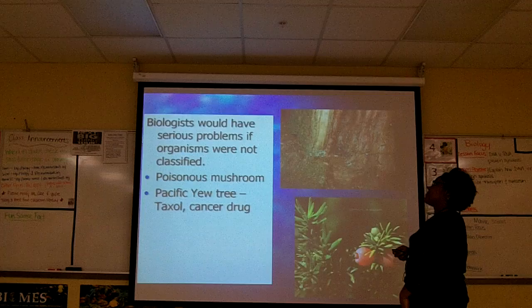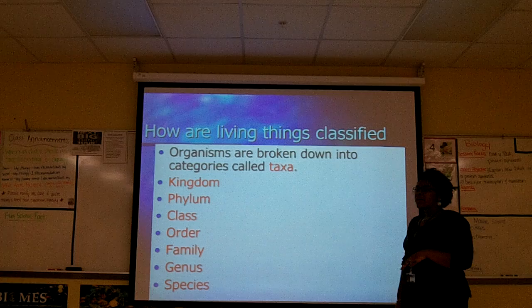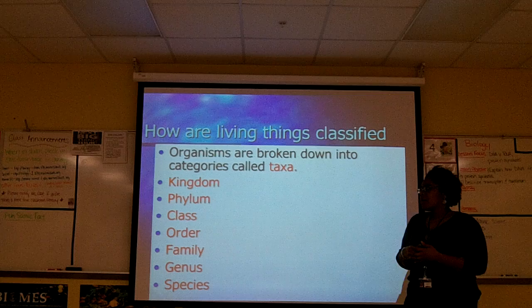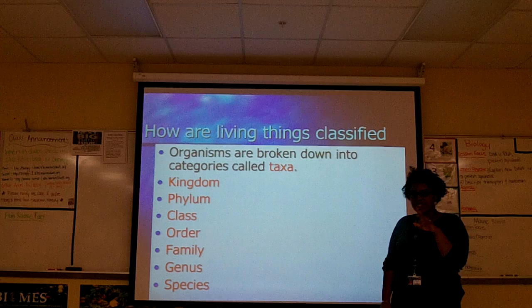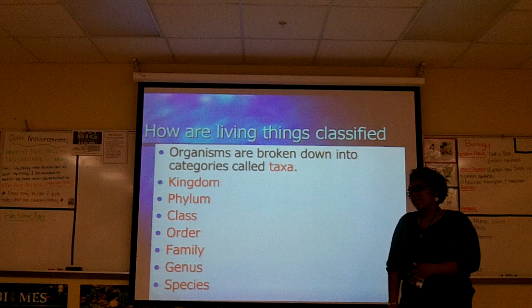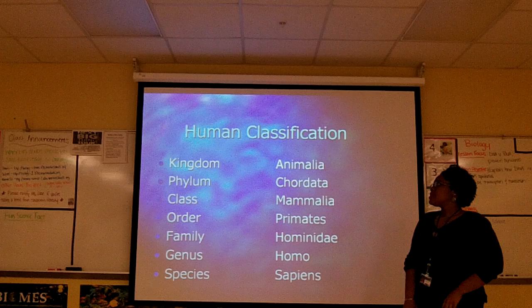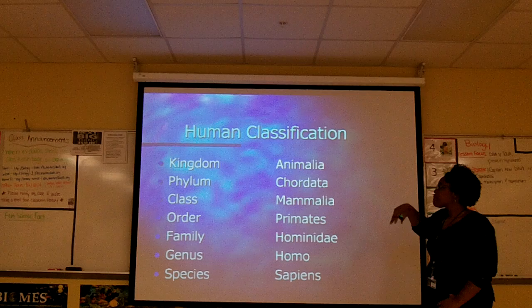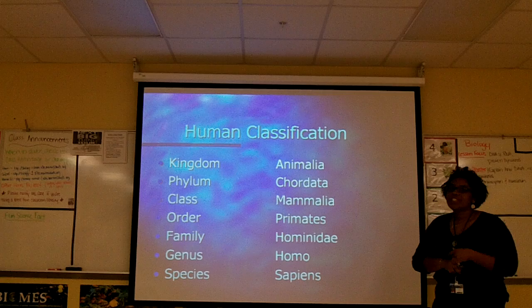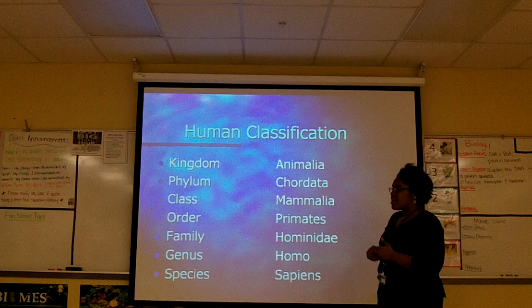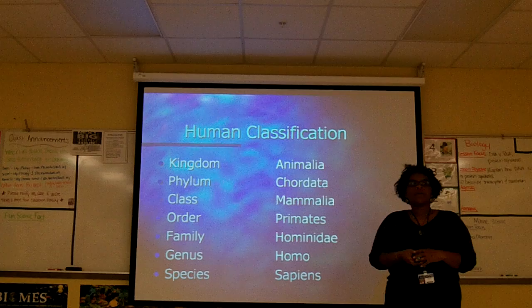How are living things classified? Organisms are broken down into categories we call Taxa. You may have seen this before: Kingdom, Phylum, Class, Order, Family, Genus, Species. When you come in to class, we'll do a mnemonic device activity to help remember the order. For example, a human is: Kingdom Animalia, Phylum Chordata, Class Mammalia, Order Primates, Family Hominidae, Genus Homo, Species sapiens. Something not on this slide: before Kingdom, we now also have Domains, which we'll cover in the next lecture.